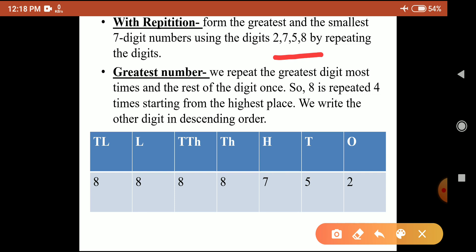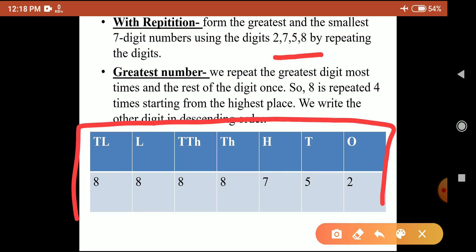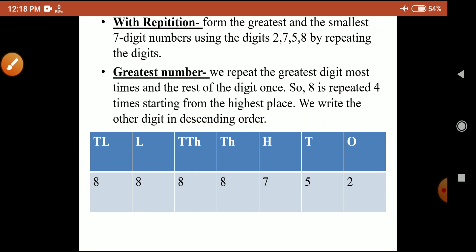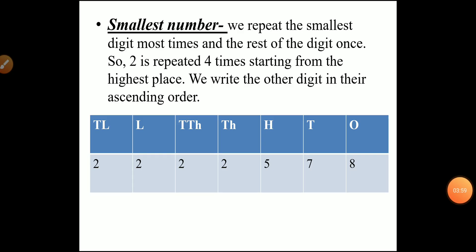We repeat 8 four times in the place value table, starting from the highest place, and the remaining digits are arranged in descending order. The final greatest number formed by the repetition method is 88,88,752 — eighty-eight lakh eighty-eight thousand seven hundred and fifty-two.